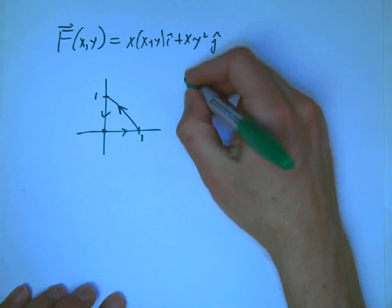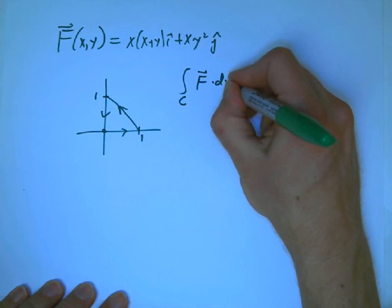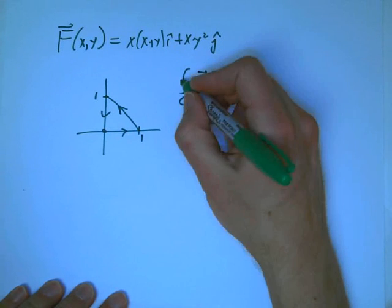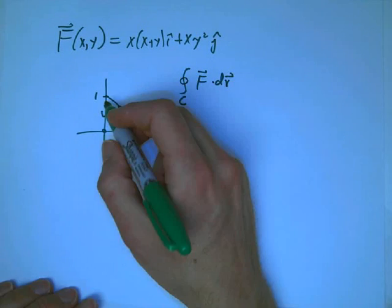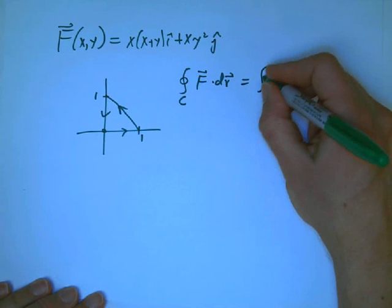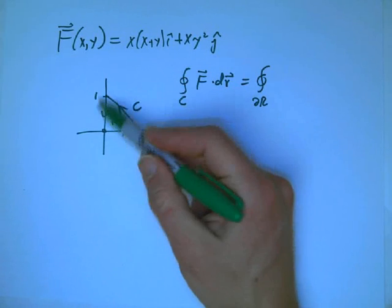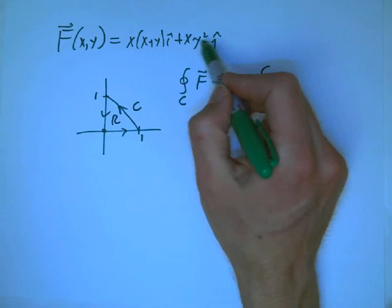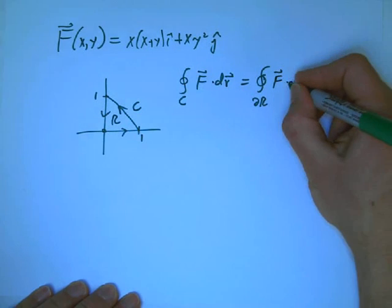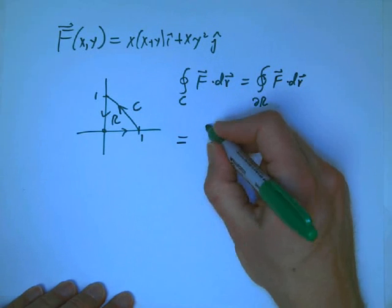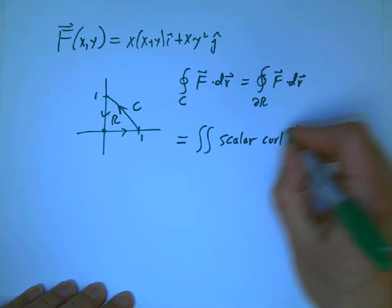So the work is a line integral along this curve of F dot dr. That's a closed curve, and it's the boundary of a region. What's really important is it's a region on which the vector field is very nice. This vector field is never bad, but that is something you always have to check. We've talked a little bit, and we'll talk more about how that can be really subtle. So Green's Theorem applies.